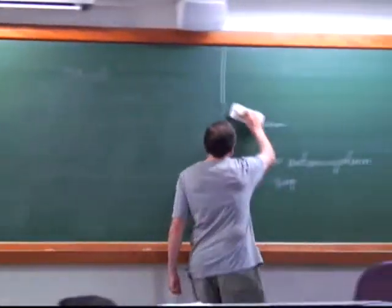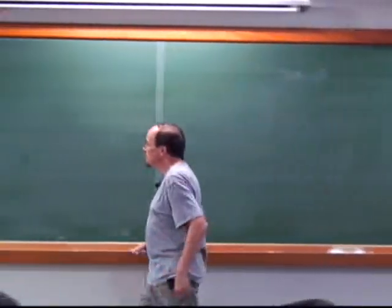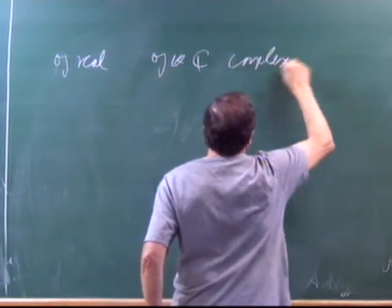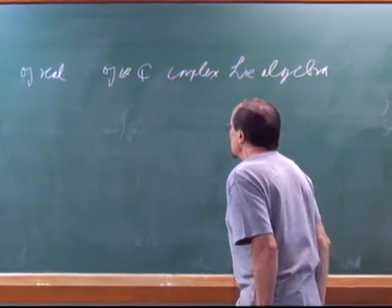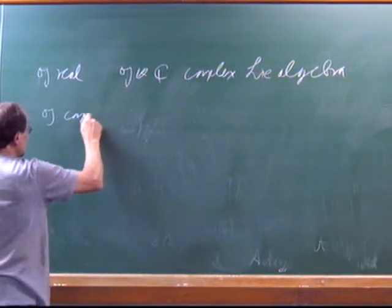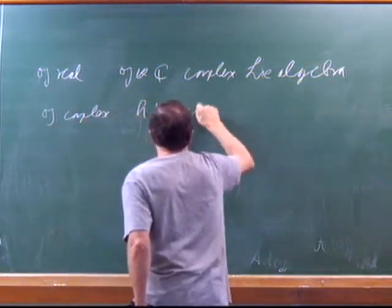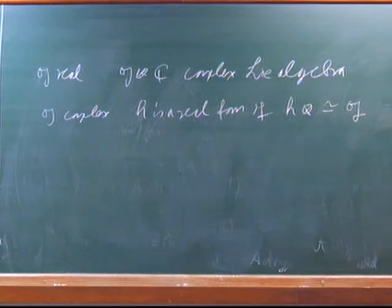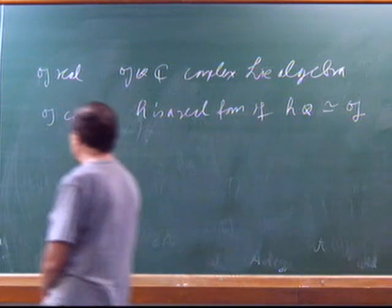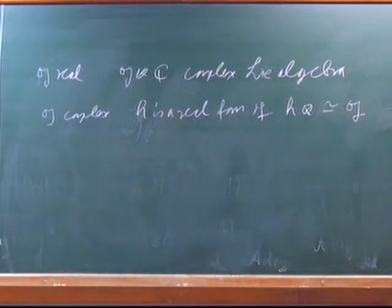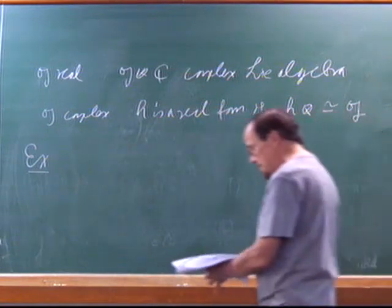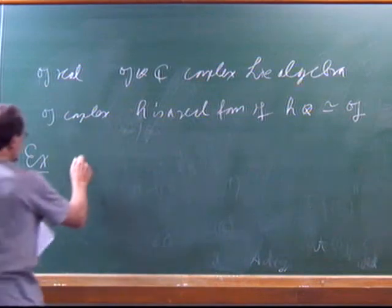So I talked about complexification. If I had G real, then G tensor C is a complex Lie algebra. If G was complex and H is a real form — if the complexification of H is isomorphic to G — I can complexify, I can try to go backwards. Not all Lie algebras have real forms, so you can't always go back. One of the exercises gives a nice example. G is spanned by three vectors X, Y, and Z.